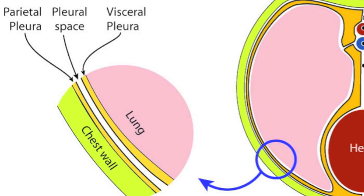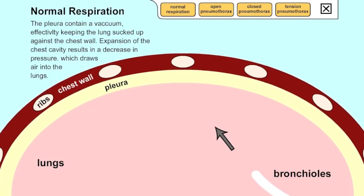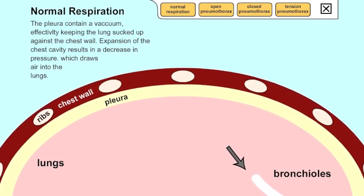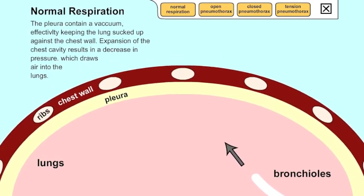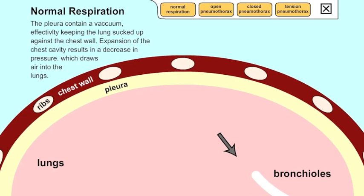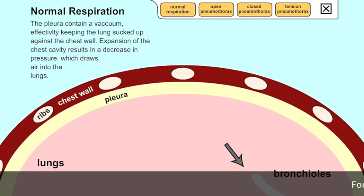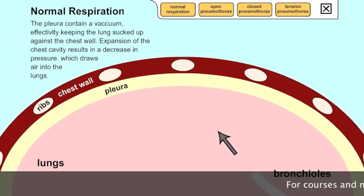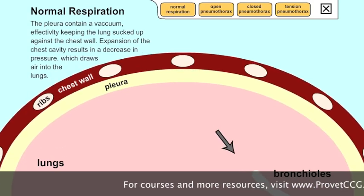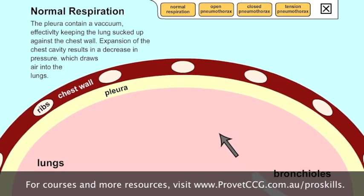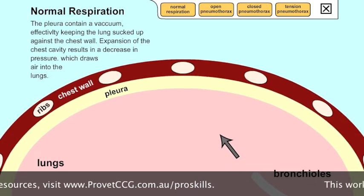So let's have a look at normal respiration. The pleura, as we've just discussed, does have a small amount of fluid and it also has a vacuum, and this vacuum effectively keeps the lungs sucked up against the chest wall. It is the vacuum that enables us to breathe — for those lungs to inflate and deflate — keeping a seal and allowing gaseous exchange. Expansion of the chest cavity will result in a decrease in pressure and this will draw air into the lungs.